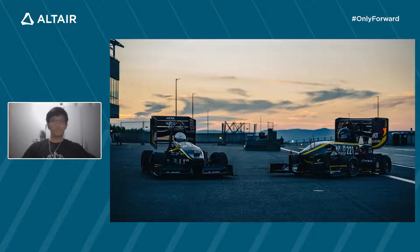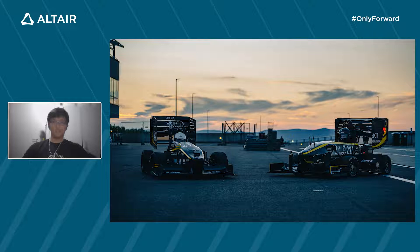A short history of car racing: the team was founded in 2006 with the first combustion car. In 2010, we had our first electric car, and in 2017, we had our first driverless car. In the picture, you can see two cars we built in 2021 — the 21D on the left, the driverless car, and the 21E on the right, the electric car.